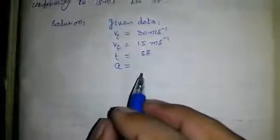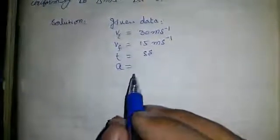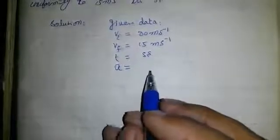A means acceleration or retardation. When the velocity of a body slows down, then its acceleration is called retardation.